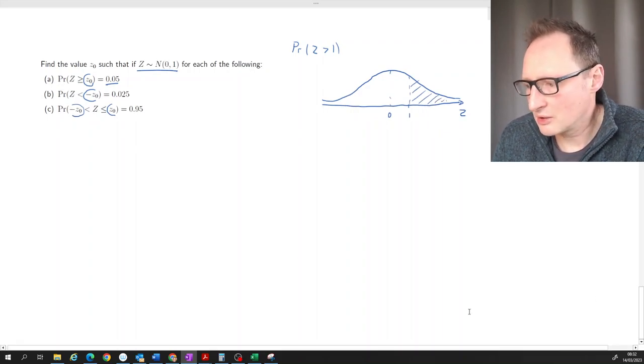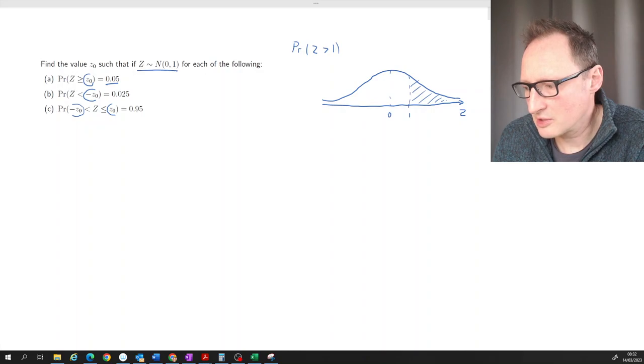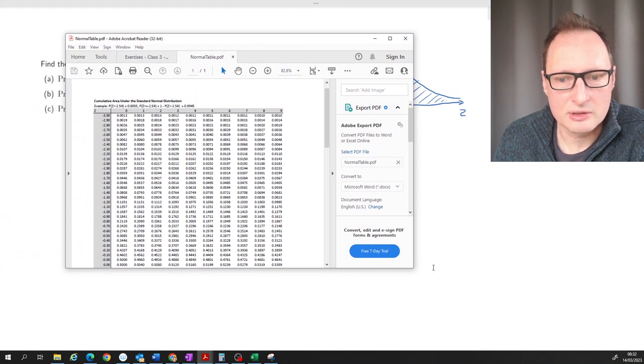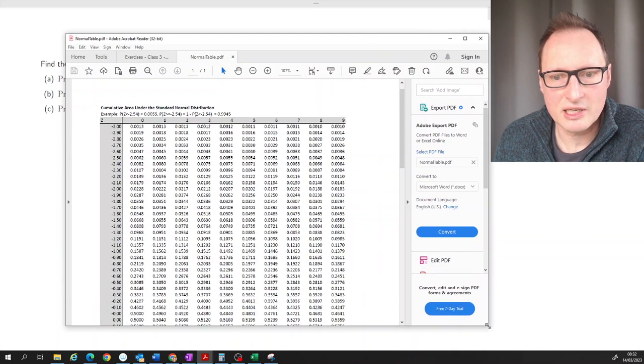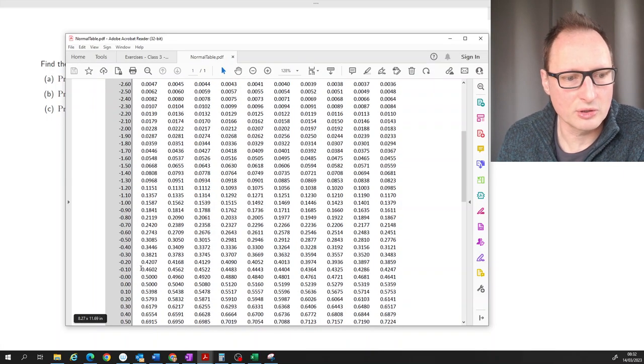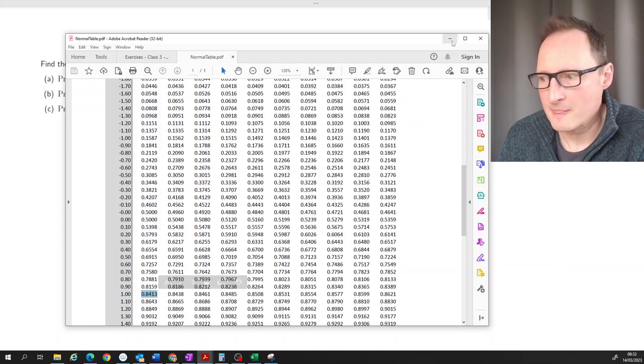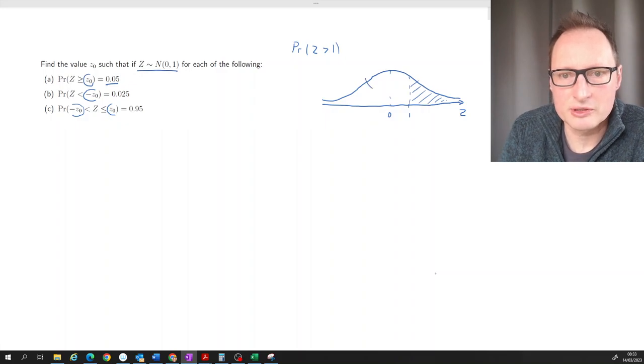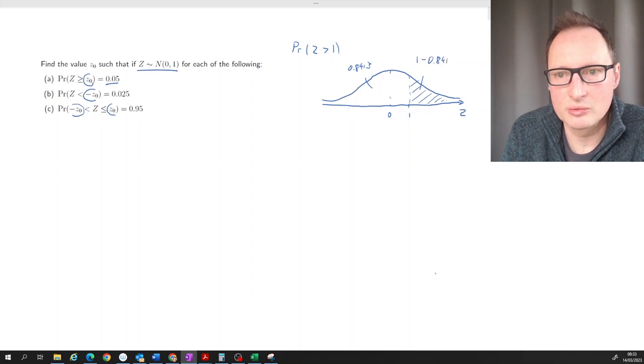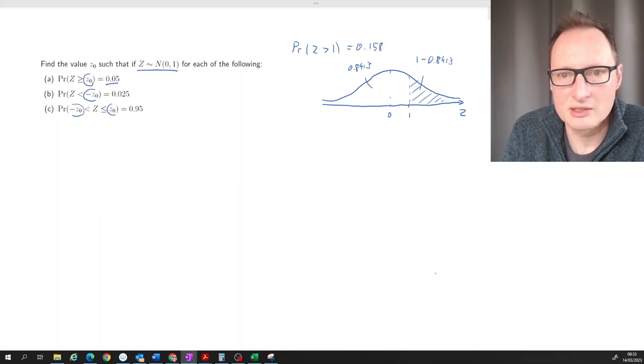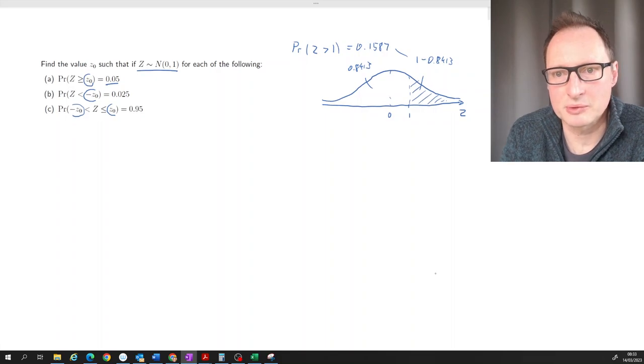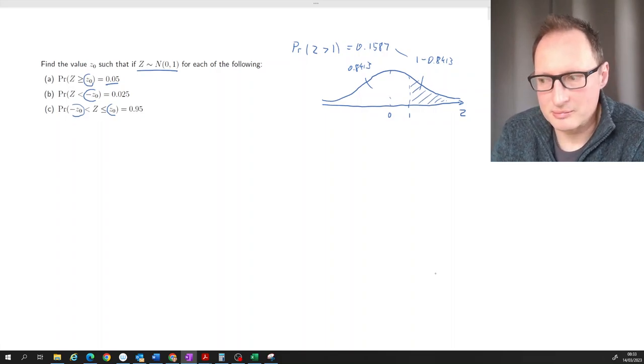We would then go to the table and recognize that the table gives us probabilities of smaller than or equal. If we go to a value of one, we get a probability of 0.8413. But we recognize that 0.8413 is this probability, and that means this one here would be one minus 0.8413, which is 0.1587. That would be that probability.